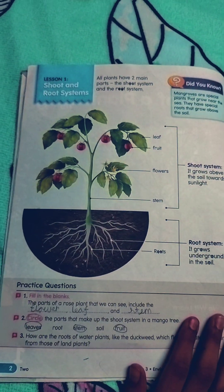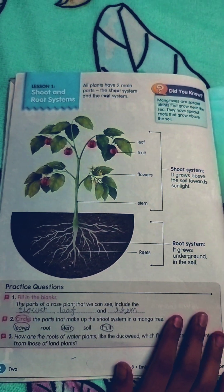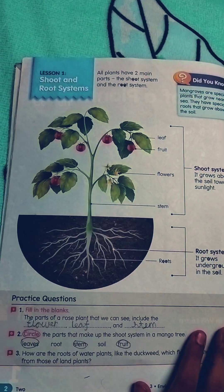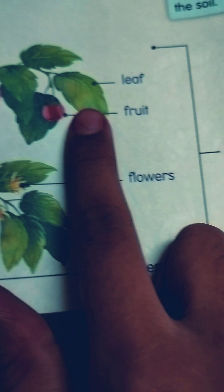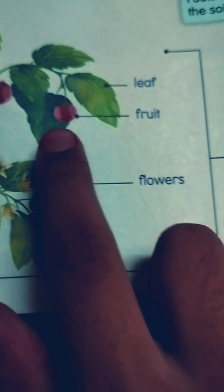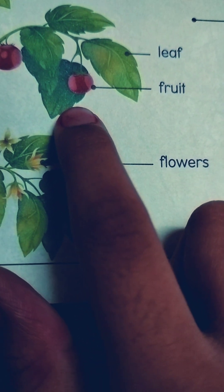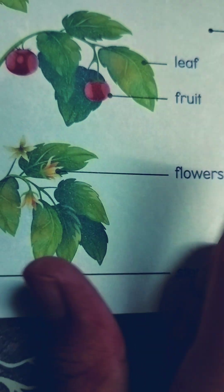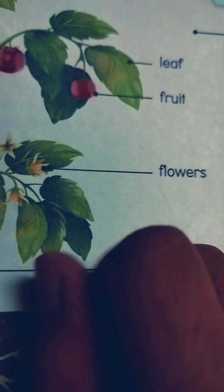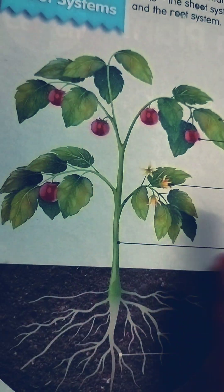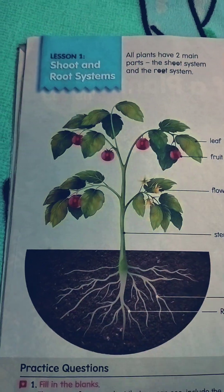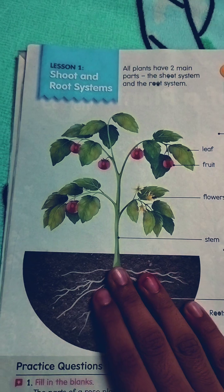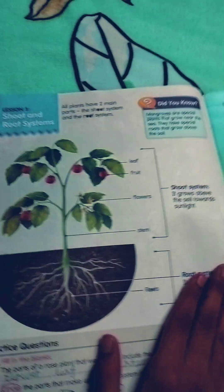This is the picture — see this. These are leaves, and this is a fruit like a tomato. And this is a flower. And this is the stem. And these are the roots. Do you understand?